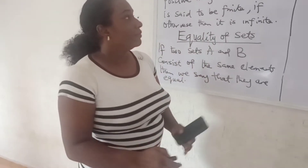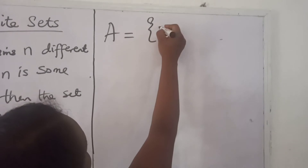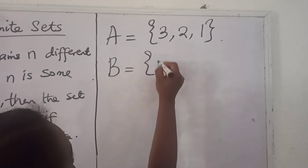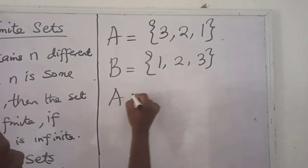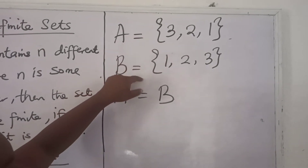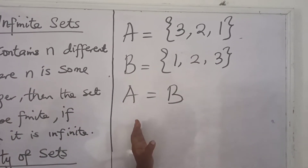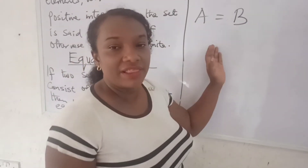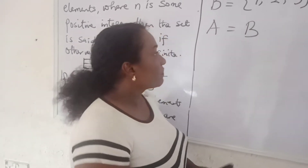Let's look at an example. Set A is equal to the set that contains the elements 3, 2, 1, while set B is the set that contains the elements 1, 2, 3. These two sets are equal because set A and set B have the same elements 1, 2, 3. The order in which the elements are written is not important; they can be written in any order, but as long as they are the same elements, the two sets are equal.